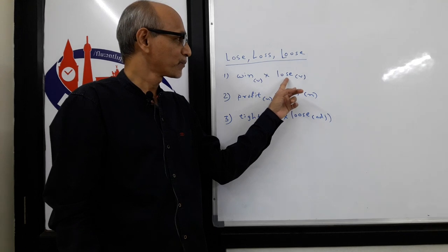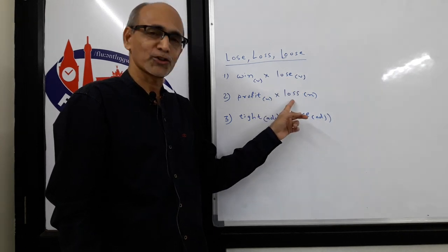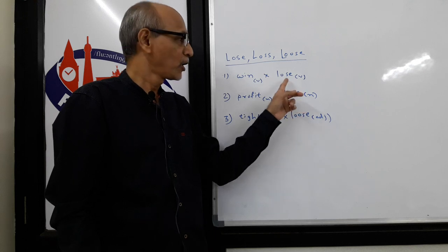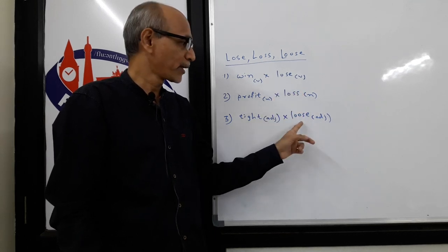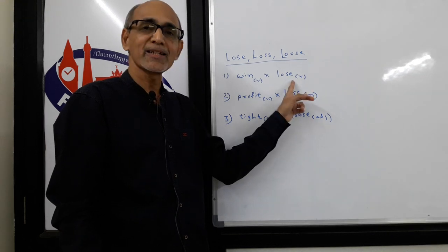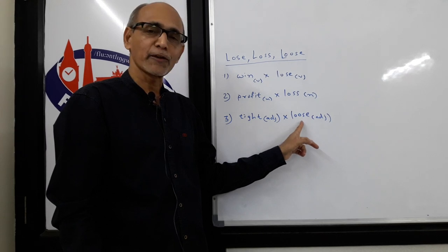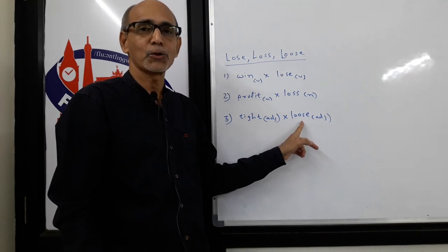Here you can see lose as a verb and loss as a noun. Lose as a verb, and loose as an adjective. The verb form has Z at the end: lose. And the adjective form has S at the end: loose.